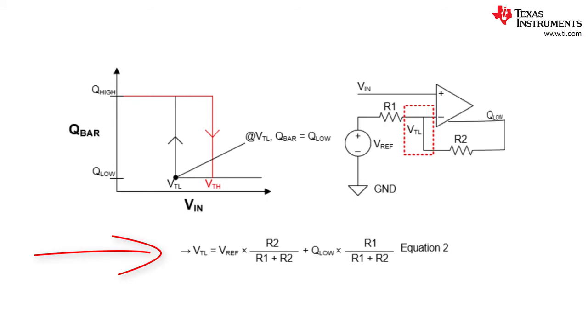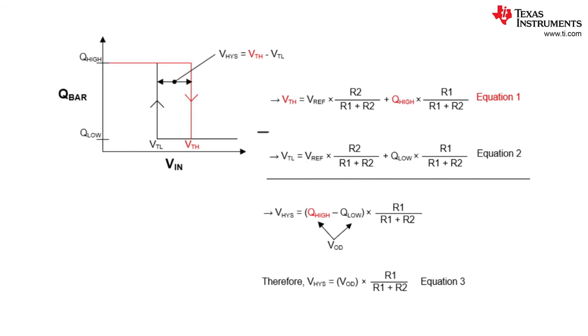An important observation to make is that the total hysteresis voltage V his is equal to the upper threshold voltage VTH minus the lower threshold voltage VTL. Using this definition for the hysteresis window voltage, we subtract equation two from equation one to arrive at equation three. And as you can see, the hysteresis window voltage is equal to the output differential voltage multiplied by R1 divided by R1 plus R2. Using these three equations, it is now possible to implement external hysteresis using the TLV 3604.